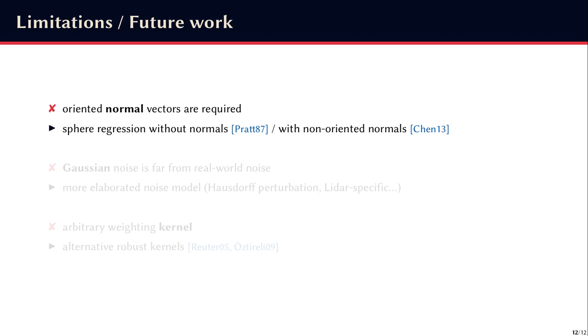Finally, there are several limitations we can work on in the future. First, oriented normal vectors are required, but we could try to analyze the asymptotic convergence of other estimators that are also based on the algebraic sphere regression, but that do not require normals, or that require normals without orientation.